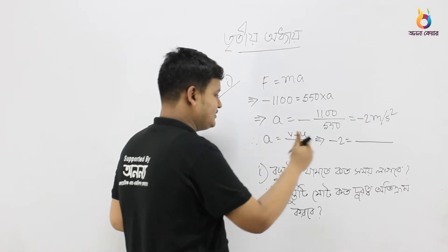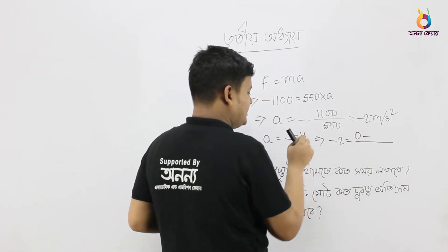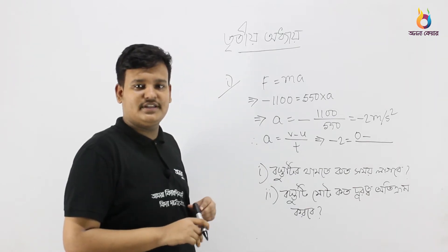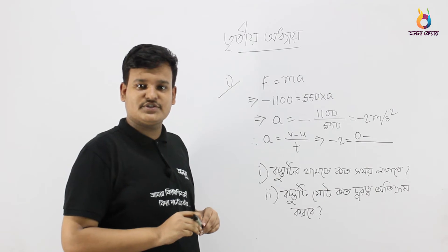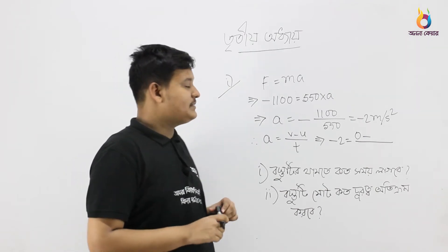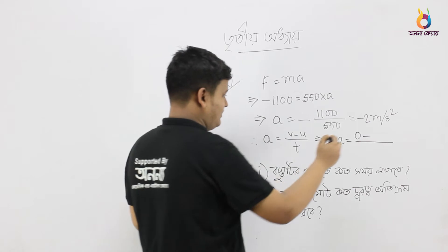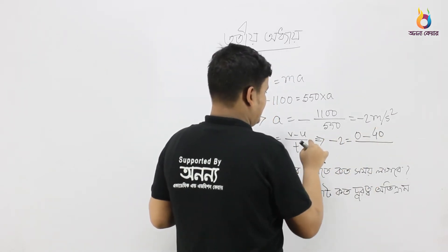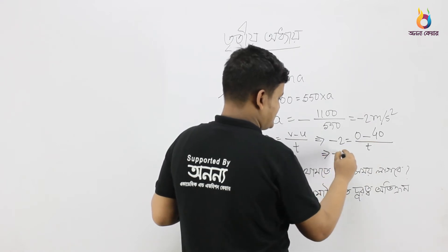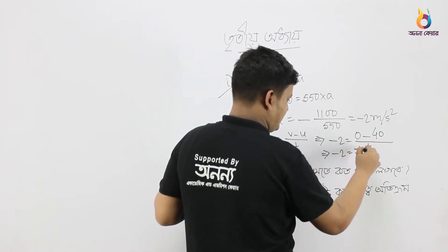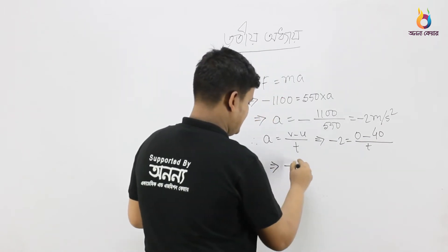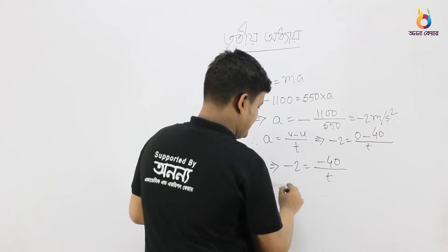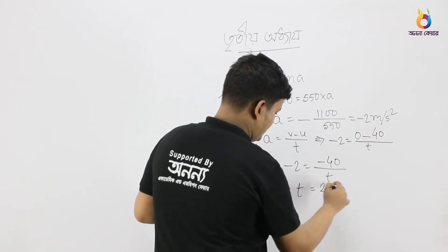Since the object comes to rest, v is equal to 0. So we have 0 minus u. The u value is 144 km per hour, which we convert: 144 divided by 3.6 gives 40 meters per second. So minus 2 is equal to minus 40 divided by t. This implies t is equal to 20 seconds.